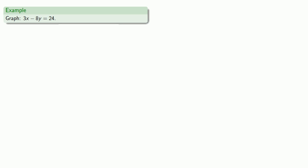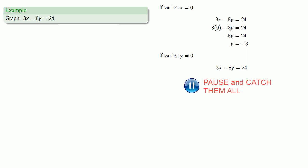We'll pick a value for one of the variables and solve for the other. If we let x equals 0, substituting and solving gives us y equals negative 3. And if we let y equals 0, then substituting and solving gives us x equals 8. So we know two points on this graph are (0, -3) and (8, 0).